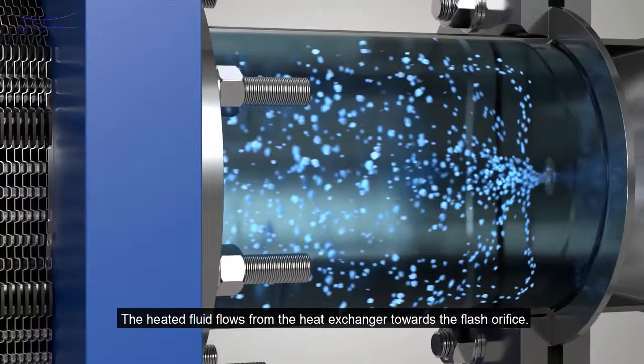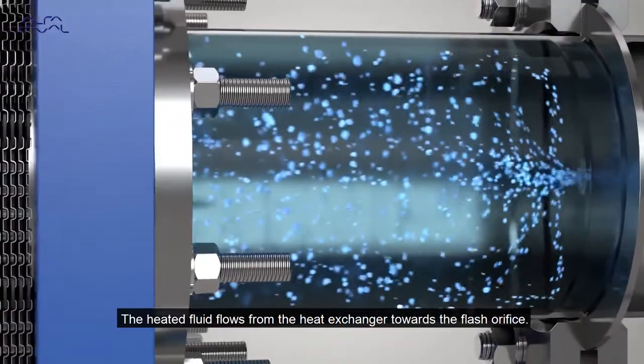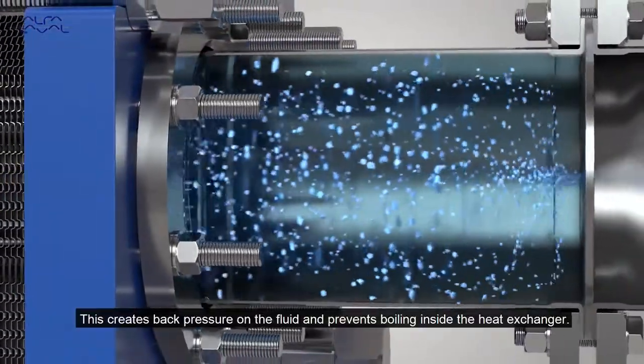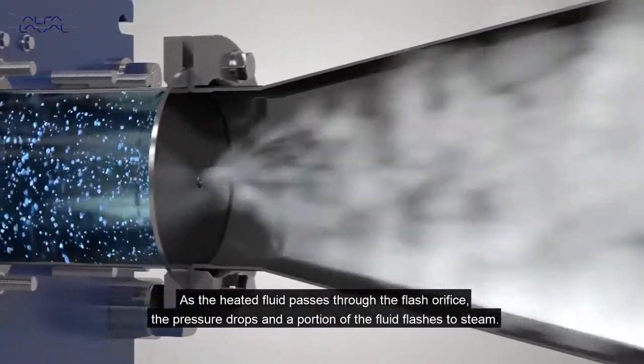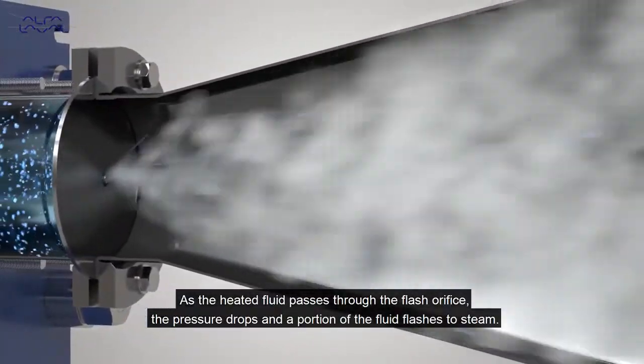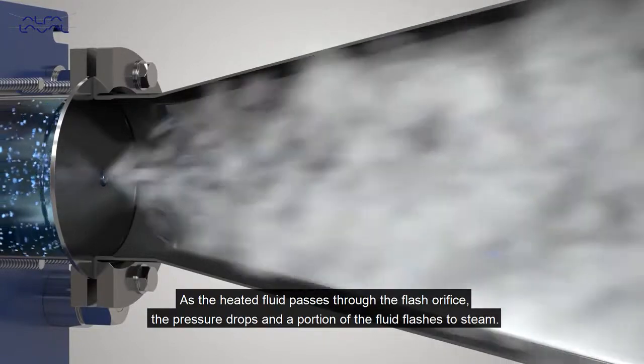The heated fluid flows from the heat exchanger towards the flash orifice. This creates back pressure on the fluid and prevents boiling inside the heat exchanger. As the heated fluid passes through the flash orifice, the pressure drops and a portion of the fluid flashes to steam.